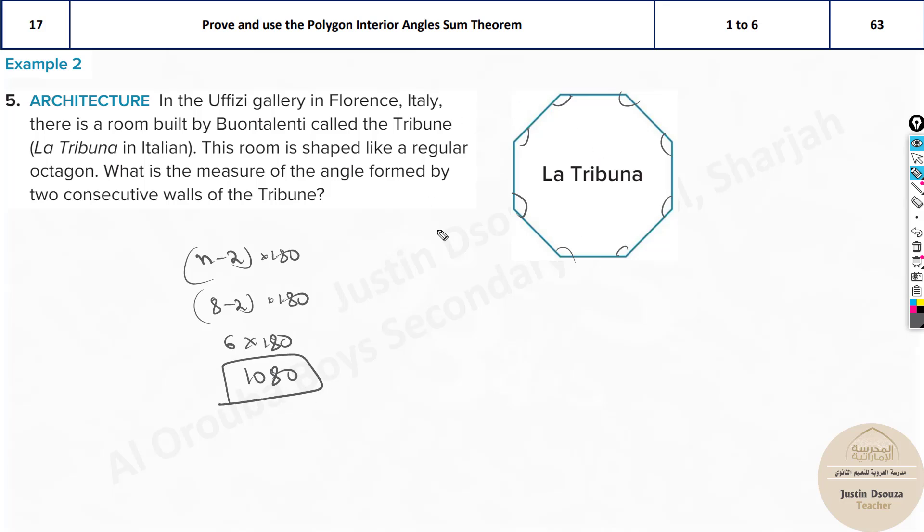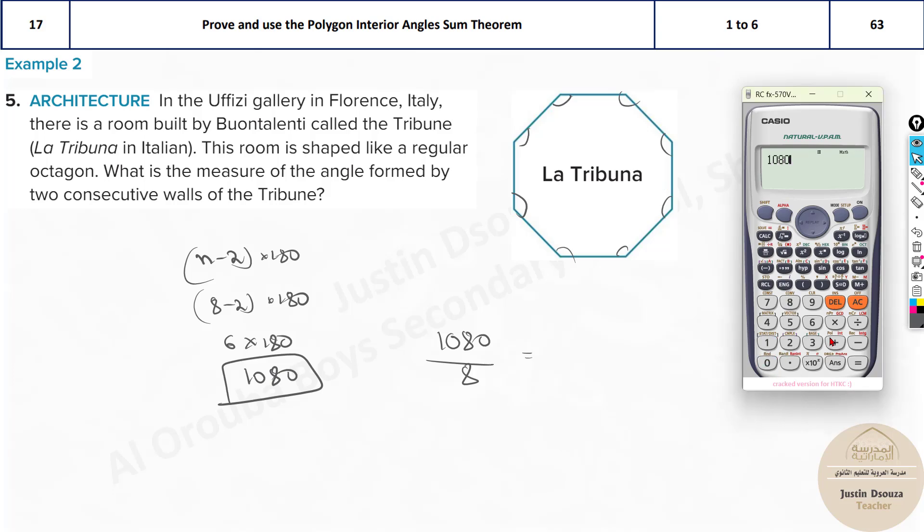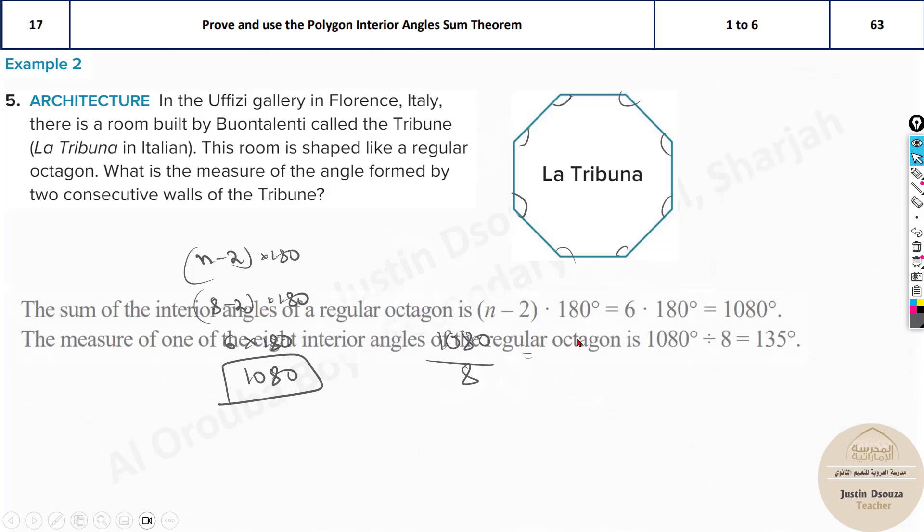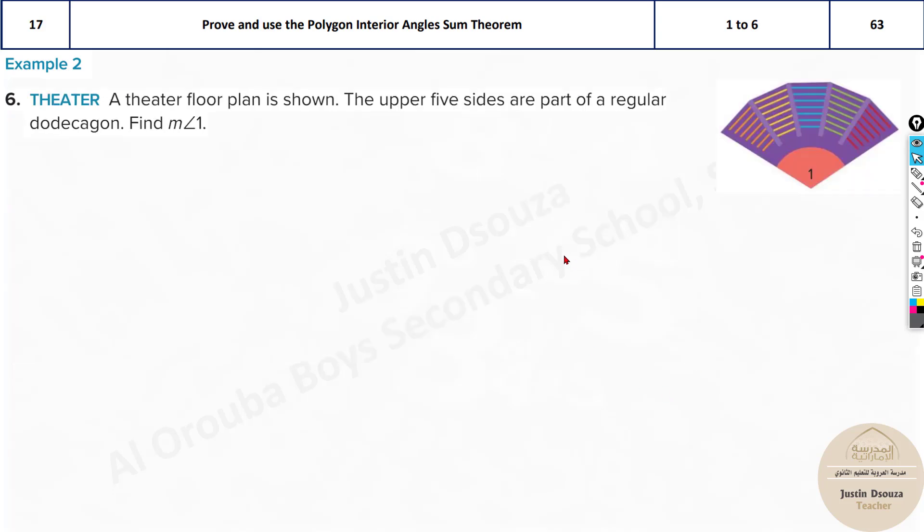This is the angle for all, but we want only for one particular side. This is the total interior angle. How do we find for one? Just divide this by 8. 1080 divided by 8. We can just use the calculator here. It will take a long time. Let's use the calculator and solve. 1080 divided by 8 equals 135. So the answer is 135 degrees interior angle. This angle between two consecutive walls is 135 degrees. Very simple.